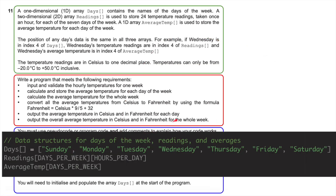Now that I've gone through the mark scheme, I want to go through this little first bit before actually starting to write. You need to initialize and populate the array 'days' at the start of the program. I've set days equal to Sunday, Monday, Tuesday, Wednesday, Thursday, Friday, Saturday. Readings will be based on days per week and hours per day, and average temperature will be based on days of the week — the average temperature for all days in that particular week.